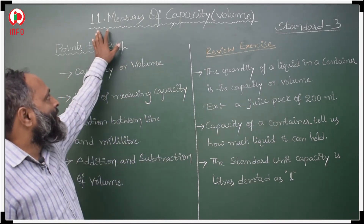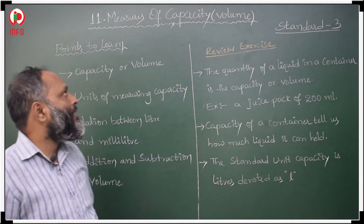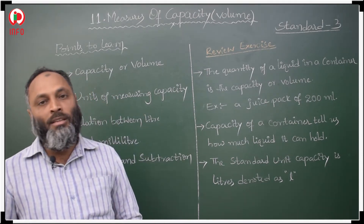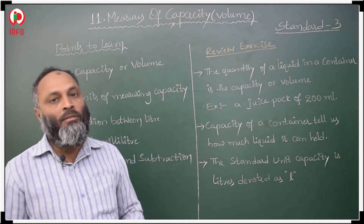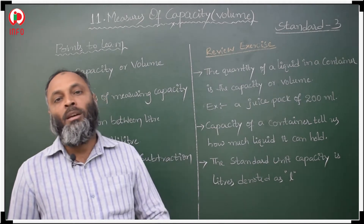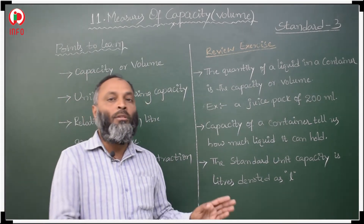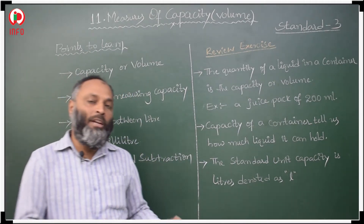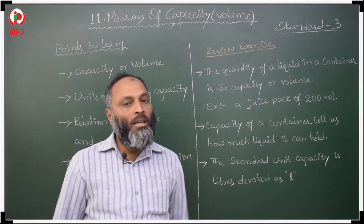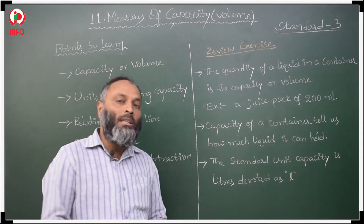Students, our next chapter is Measures of Capacity, which is nothing but volume. Before this, we learned measures of weight and measures of length — how to measure length, how to measure weight. The units of length are meters, centimeters, millimeters, and kilometers, and weight units are grams and kilograms. We also discussed how to add, subtract, and convert these units in our previous chapters.